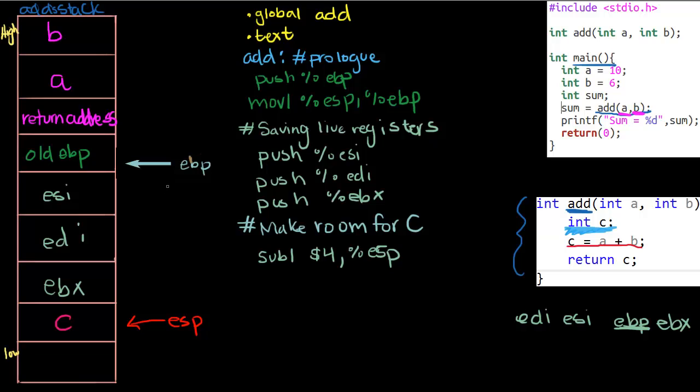When we're doing whatever we want on the stack, EBP will not change. It stays in one spot, it's grounded. But ESP on the other hand is gonna be moving all over the place. So it's good to have EBP as this base that we can reference our stack by, and we'll actually use it in this video.